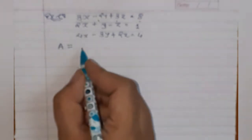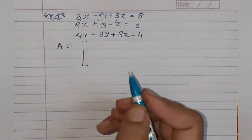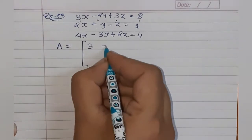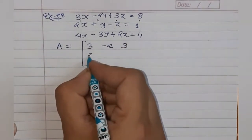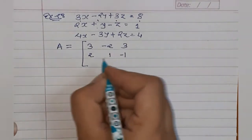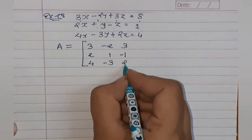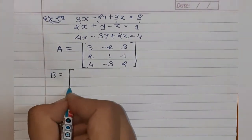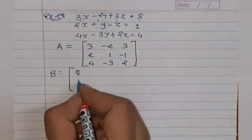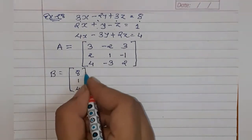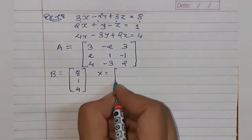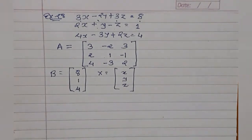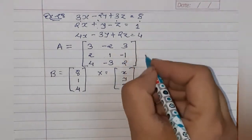A = સહગુણકોનો શ્રેણીક (નિશાની સાથે): [3, -2, -3 / 2, 1, -1 / 4, -3, 2]. B = અચળ પદો: [8, 1, 4]ᵀ. X = ચલ: [x, y, z]ᵀ. સૌથી પહેલા આ A નો નિશ્ચાયક ચકાસો.